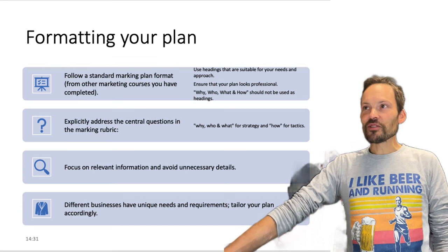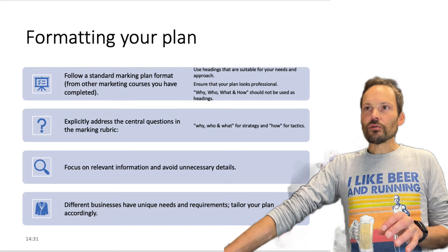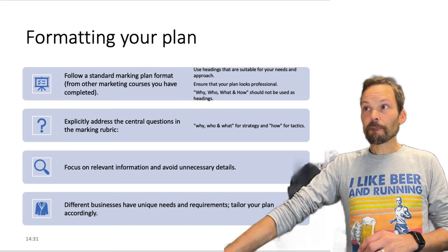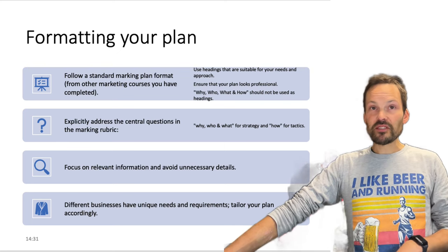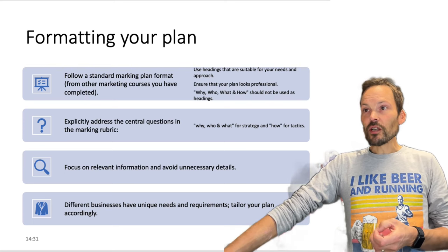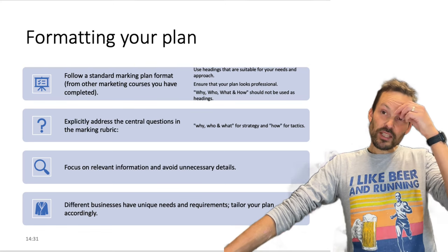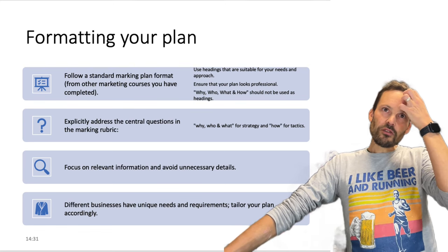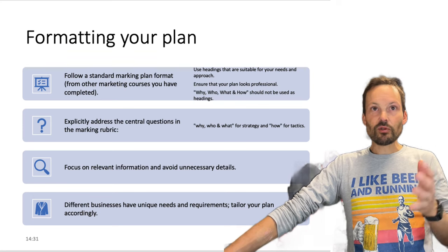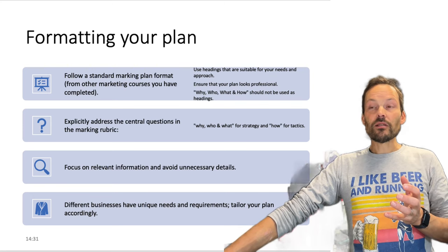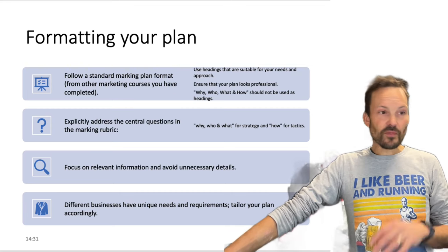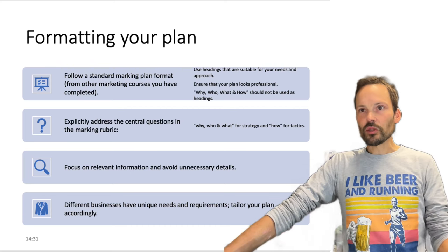Ensure that it looks professional and that you explicitly address those marking rubric questions — that's really important. Focus on relevant information and avoid unnecessary details, as 2,500 words is quite tight. For example, don't spend half a page on the history of the business — just get to the point. Why is this plan needed? You only need a few sentences saying what the business is. Avoid unnecessary information and answer the questions you will be assessed on.